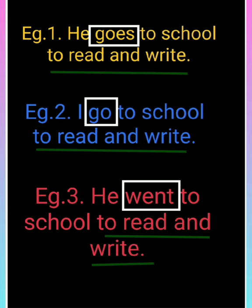Ek aur tarike se dekh sakte hain — tense badal kar. Present tense tha, chaliye past tense mein likhte hain: 'He went to school to read and write.' Toh 'goes' past tense mein 'went' ho gaya. Iska matlab yeh verb number, person aur tense ke saath apne aap ko parivartit karta hai. Aise verbs ko hum finite verb kehte hain. Toh humein pata chal gaya ki 'goes' is vakya mein finite verb hai.